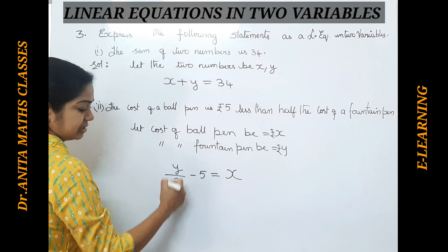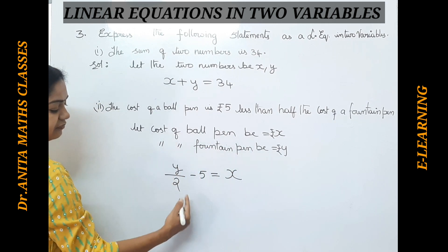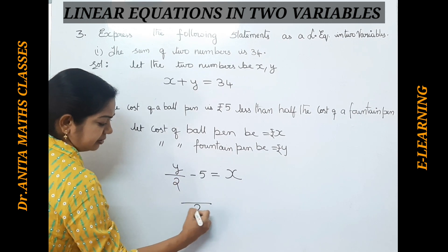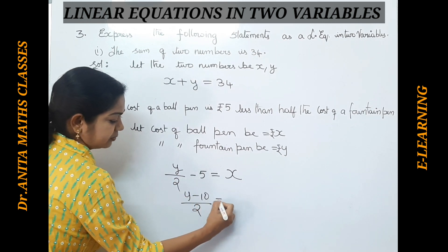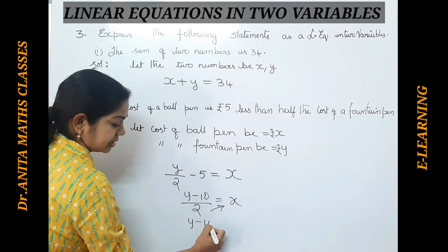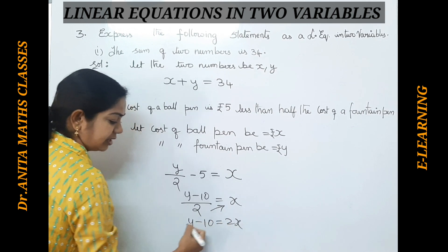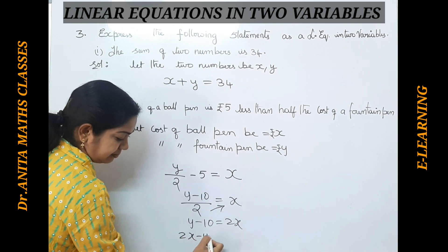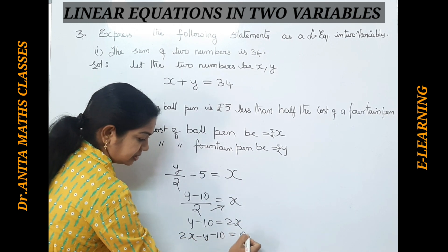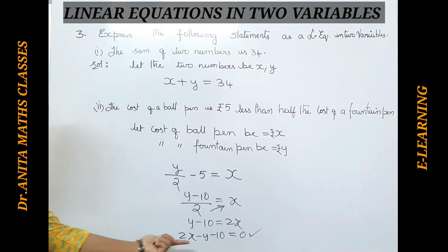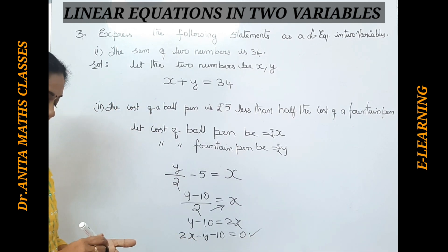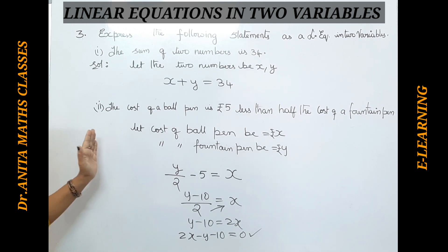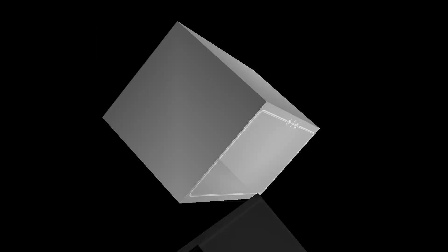Now we bring this into the general form. Taking the LCM: y − 10 = 2x. Rearranging: 2x − y + 10 = 0. Wait — let us cross-multiply: y − 10 = 2x, so writing it as 2x − y + 10 = 0. This is the final expression as a linear equation in two variables. Pause the video and note it down. We will continue the remaining problems in our next session. Thank you all.